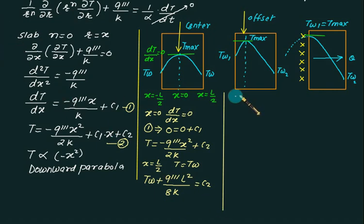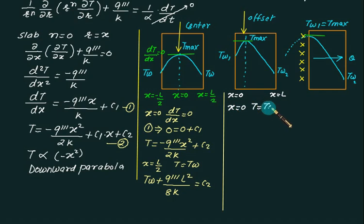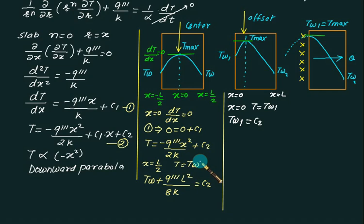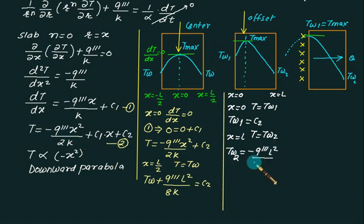When the location of maximum temperature is unknown (Case 2, offset), assign x = 0 at the left face and x = L at the right face. At x = 0, T = Tw1, which gives C2 = Tw1 directly. At x = L, T = Tw2, substituting into equation 2 yields: Tw2 = -q‴L²/(2k) + C1·L + Tw1. Solve this for C1, then the full temperature distribution is known.